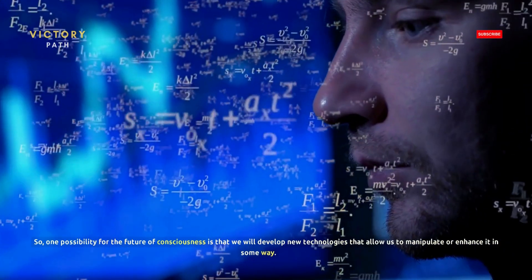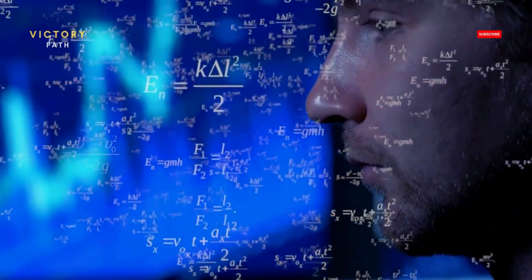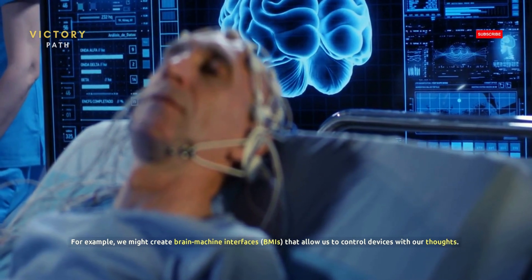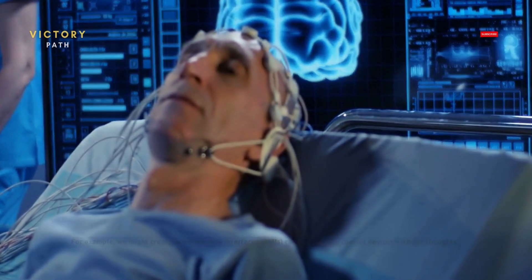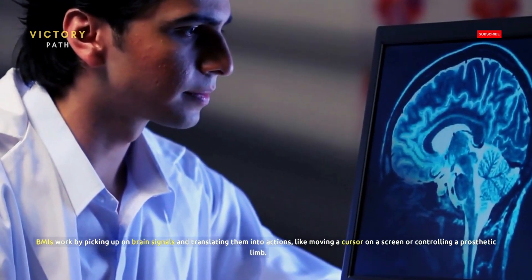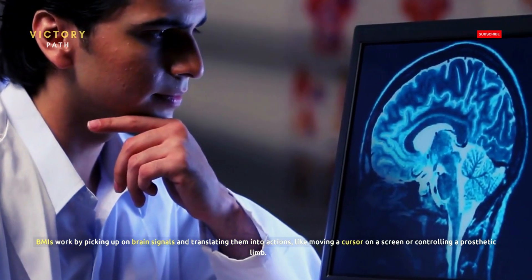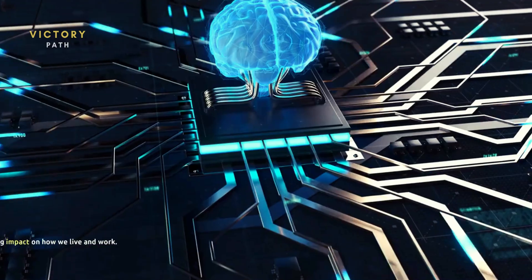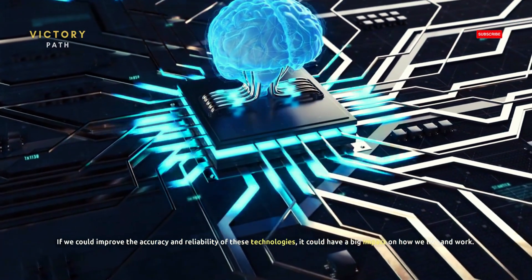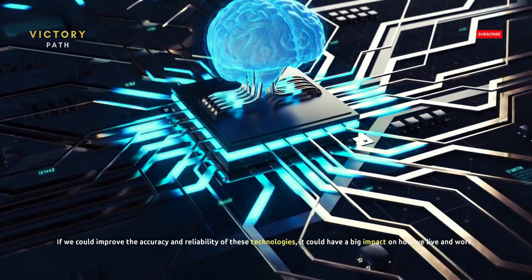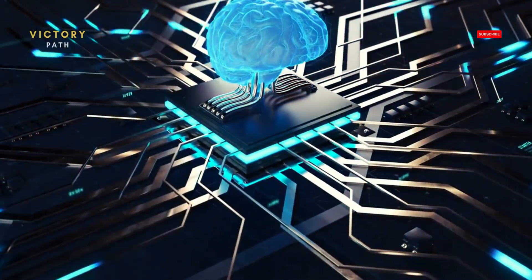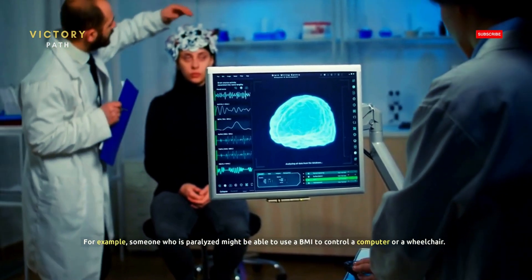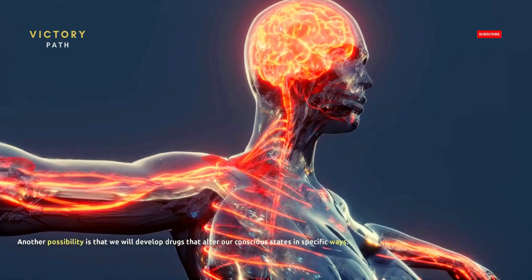So one possibility for the future of consciousness is that we will develop new technologies that allow us to manipulate or enhance it in some way. For example, we might create brain-machine interfaces that allow us to control devices with our thoughts. BMIs work by picking up on brain signals and translating them into actions like moving a cursor on a screen or controlling a prosthetic limb. If we could improve the accuracy and reliability of these technologies, it could have a big impact on how we live and work. For example, someone who is paralyzed might be able to use a BMI to control a computer or a wheelchair.